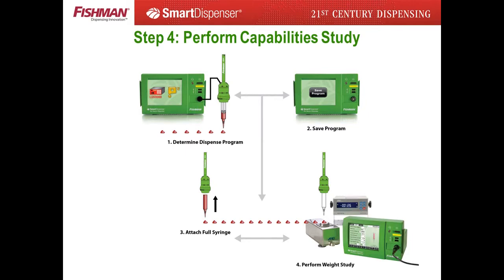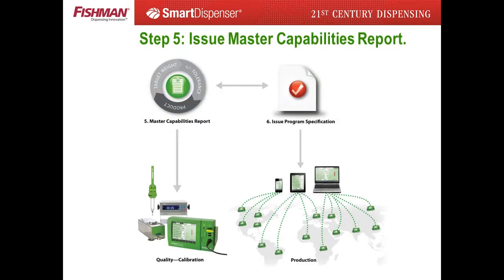The capabilities study focuses on the target fluid deposit weight and its plus/minus tolerance. The smart dispenser is designed to communicate with an A&D analytical weight sensor. Activate the weighing sensor option in the software, determine the dispense program, input the target weight, perform a weight study on a full syringe, and the smart dispenser will automatically record the weight data in an Excel CSV file on the smart dispenser's hard drive. Import into Excel for statistical analysis to determine the target weight with plus/minus tolerance for the particular fluid.